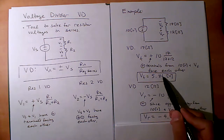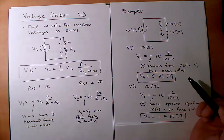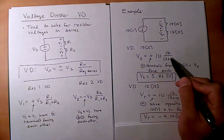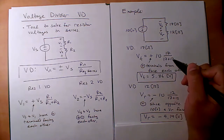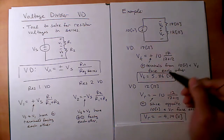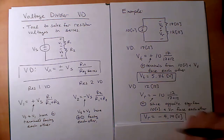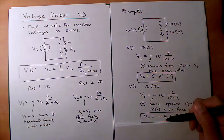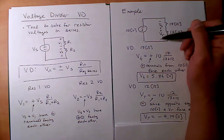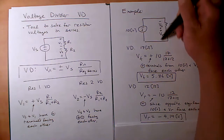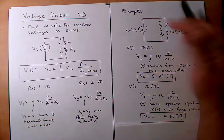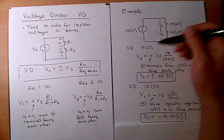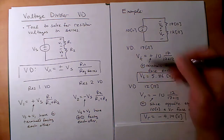Results: Vt ≈ 5.86 V, Vr ≈ -4.14 V. The instructor initially made an arithmetic error (used 17+2 instead of 17+12) but caught it because 5.86 and -4.14 didn't sum to 10 V by KVL. After correcting, Vt ≈ 5.86 V and Vr ≈ -4.14 V, which do verify via KVL. Always check physical intuition and that KVL holds around the loop.